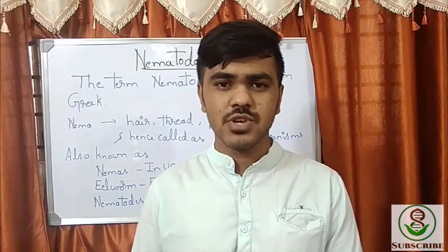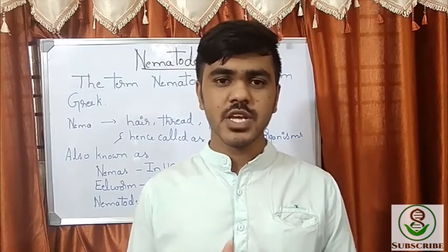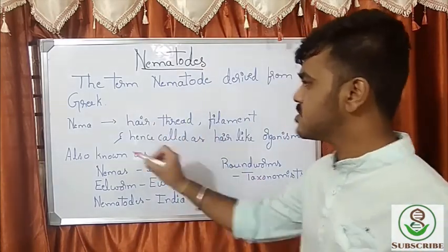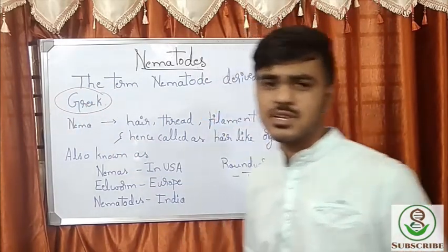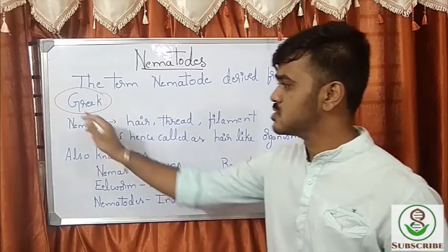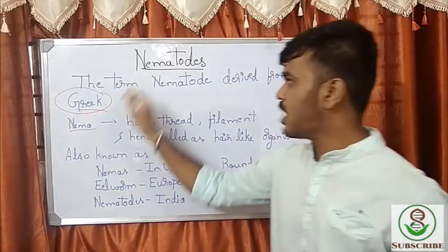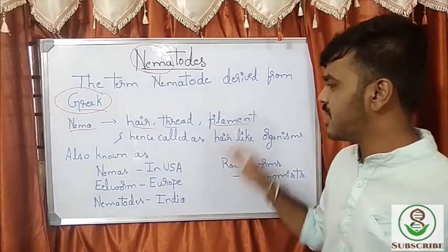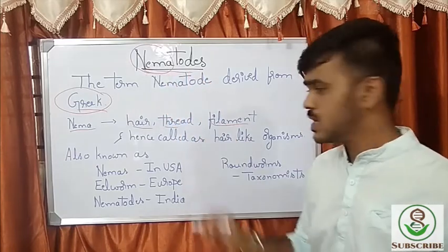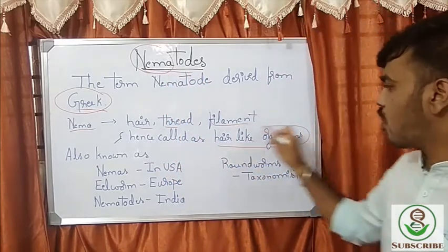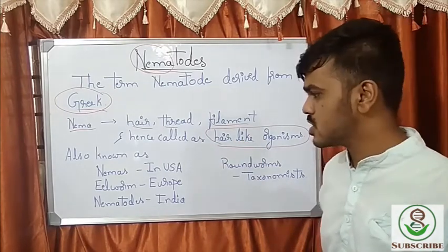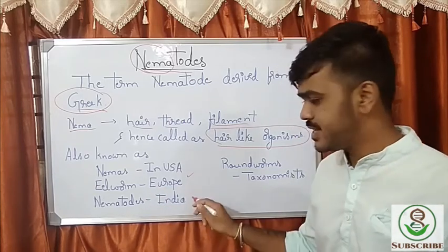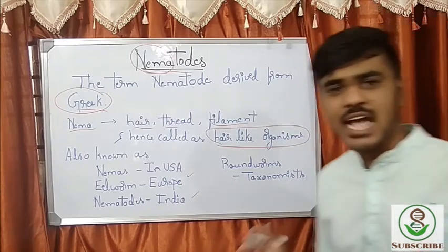This series of videos is all about nematodes. The term 'nematode' is derived from Greek — 'nema' means a hair, thread, or filament. So the meaning of nematode is the hair-like organism. Nematodes are also known as nemas in the USA, eel worm in Europe, nematode in India, and roundworm by the taxonomist.